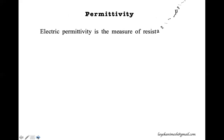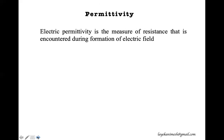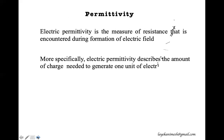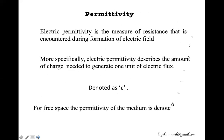What is permittivity? Permittivity is basically the measure of resistance encountered during the formation of an electric field. More specifically, electric permittivity describes the amount of charge needed to generate one unit of electric flux, and it is denoted as epsilon. In the case of free space, the permittivity of free space is denoted as epsilon naught.